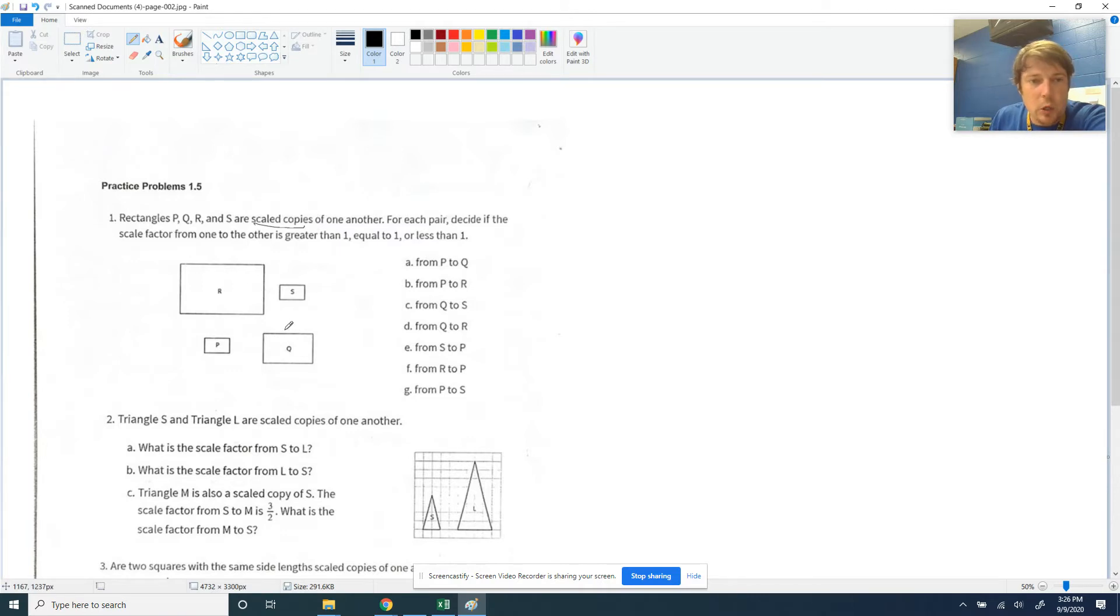We have rectangles P, Q, R, and S, and they are scaled copies of one another. So that tells us a lot of information. If they're scaled copies, then they look a lot like each other, but they're possibly different sizes. All right, so we got all of our PQRS right here, and for each pair that they're going to have us compare, it wants us to decide if the scale factor from one to the other is greater than 1, equal to 1, or less than 1.